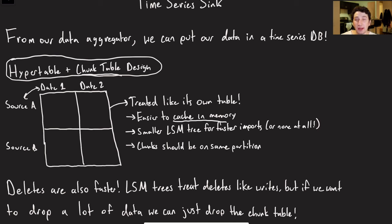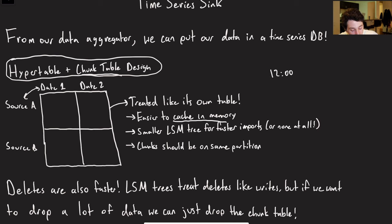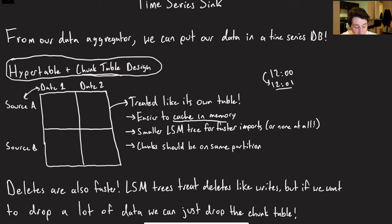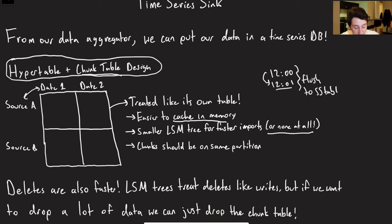The LSM tree per chunk table is also going to be smaller, which is good because typically we're only writing to one at a time. With a smaller LSM tree there are literally fewer writes, so the logarithmic time complexity relative to its size is a little bit faster. Additionally, if we know our data is coming in ordered by timestamp — 12:00, then 12:01 — we don't necessarily even need an LSM tree since it's there to order incoming data. We could just use a linked list and flush it to an SS table when it gets big enough.